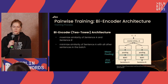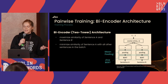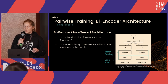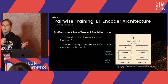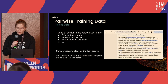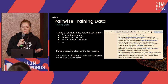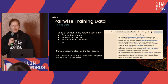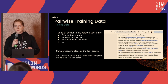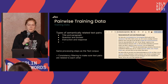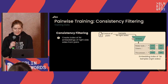The next stage is pairwise training using a bi-encoder architecture. We get text pairs — sentence A and sentence B — that are semantically similar, and we try to maximize the cosine similarity between the representations of both texts. We mine naturally occurring pairs such as titles and paragraphs, questions and answers, instructions and responses. These pairs go through the same preprocessing as the raw data, plus an extra consistency filtering step to make sure the pairs actually belong together.